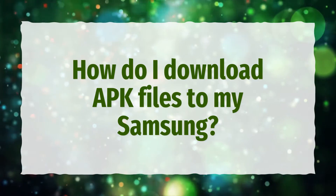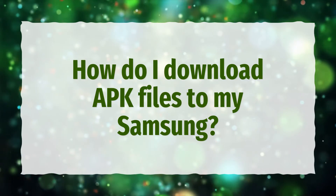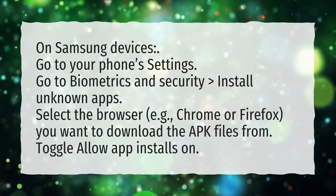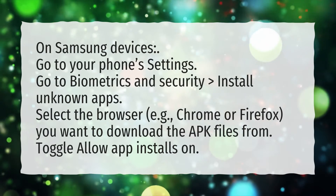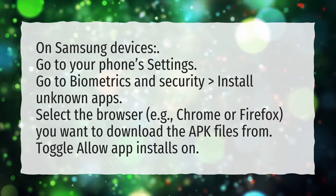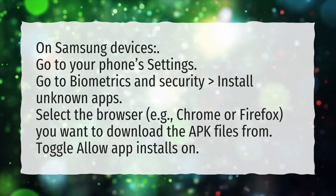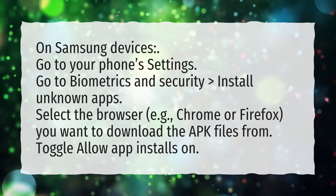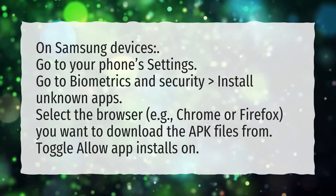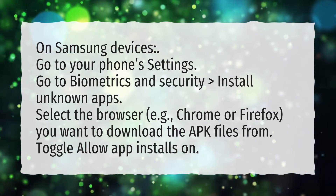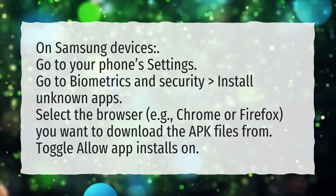How do I download APK files to my Samsung? On Samsung devices, go to your phone's settings. Go to Biometrics and Security. Select Install Unknown Apps. Select the browser, e.g., Chrome or Firefox, that you want to download the APK files from. Toggle Allow App Installs on.